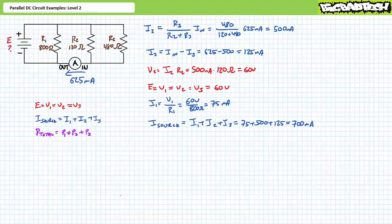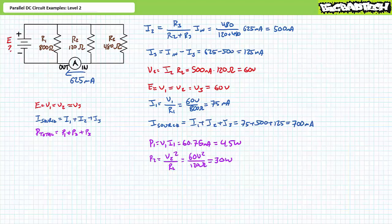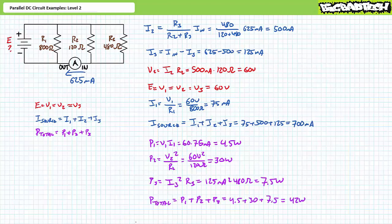P1 equals V1 times I1, demonstrating R1 dissipates 4.5 watts. P2 equals V2 squared divided by R2, demonstrating R2 dissipates 30 watts. P3 equals I3 squared times R3, demonstrating R3 dissipates 7.5 watts. Total power equals P1 plus P2 plus P3, yielding 42 watts. As a check, total power equals supply voltage times source current, which similarly yields 42 watts — confirming our answers are correct. We can move on to our final illustrated example.